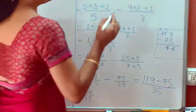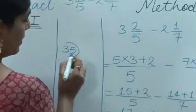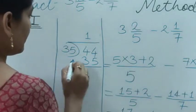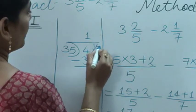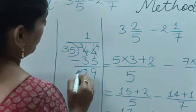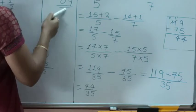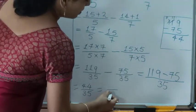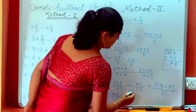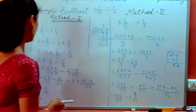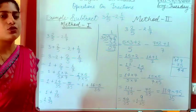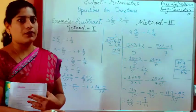In the rough column we divide 44 by 35. 35 goes once with remainder 9, so 44 upon 35 equals 1⁹/₃₅. The answer is 1⁹/₃₅ — the same as method one. Students, both methods give the same answer, so you can solve it using either method.